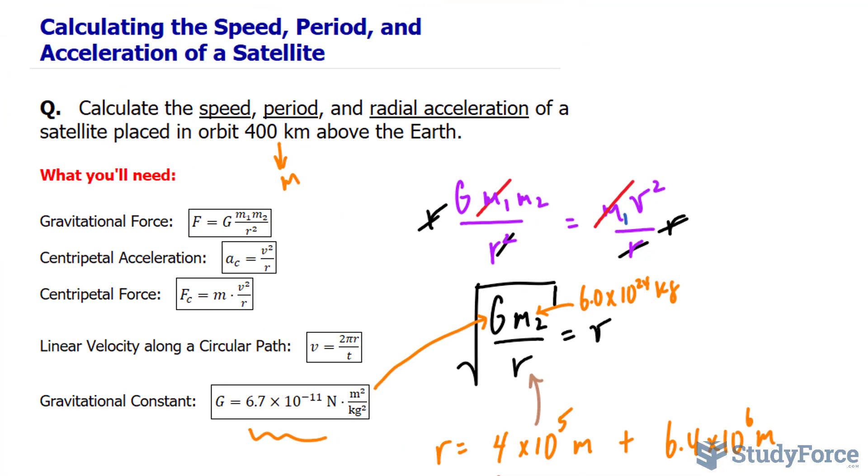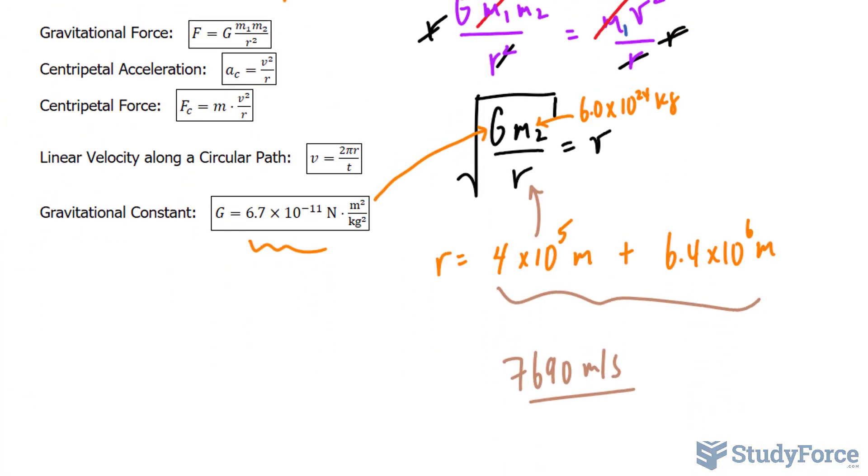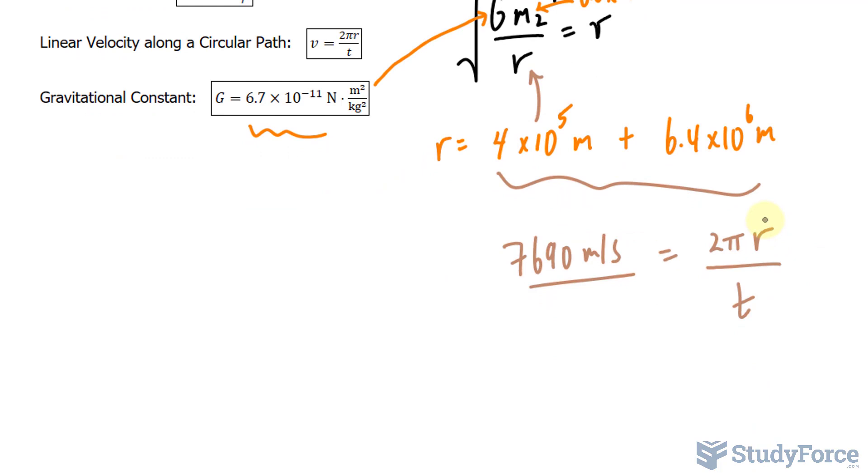We also need to know the period. We will set this equal to the linear velocity along a circular path formula. So I'll set that equal to 2πr over t. By solving for t, the time, we find the period. Solving for t is not hard. We just multiply both sides by t and then divide both sides by the factor 7,690.